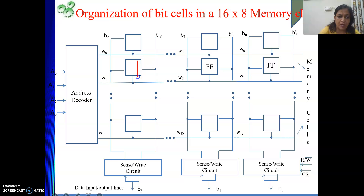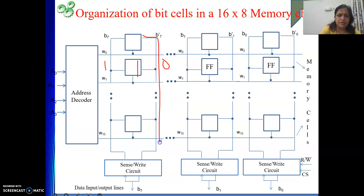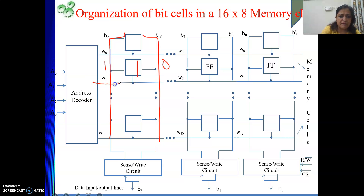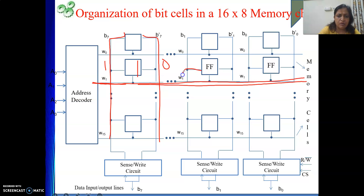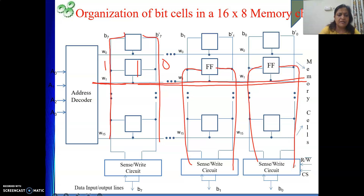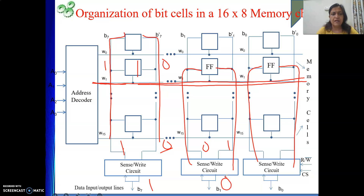If a cell is storing bit value 1, then the bit line value will be 1 and the complementary bit line value will be 0. The bit line is common to all cells in a particular column, but which cell gives the value depends on which flip-flop is enabled. All flip-flops in the enabled row send their values to the sense-write circuit, which detects the logic level on each line and outputs 1 or 0 accordingly.